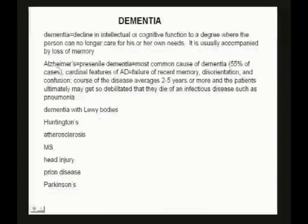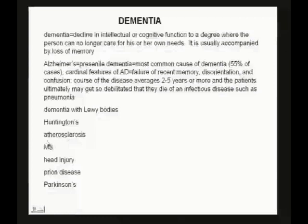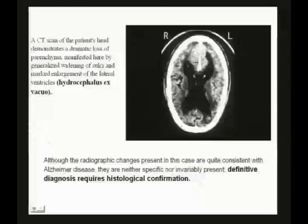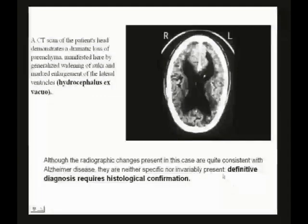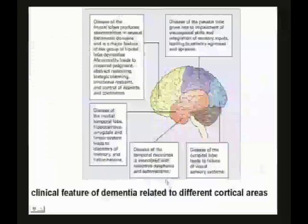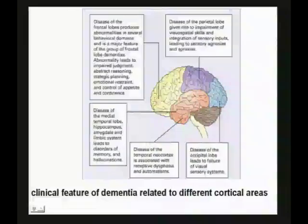There are many types of dementia. The most important is Alzheimer's. Others include dementia with Lewy bodies, Huntington's, atherosclerosis, multiple sclerosis, head injury, prion disease, and Parkinson's disease. A CAT scan of an Alzheimer's patient shows massive loss of brain matter and hugely enlarged ventricles. The cortical areas attacked by the disease define the type of dementia. The temporal lobe of an Alzheimer's patient is absolutely shrunken, while the motor strip is relatively spared — so motor behaviors are pretty good.